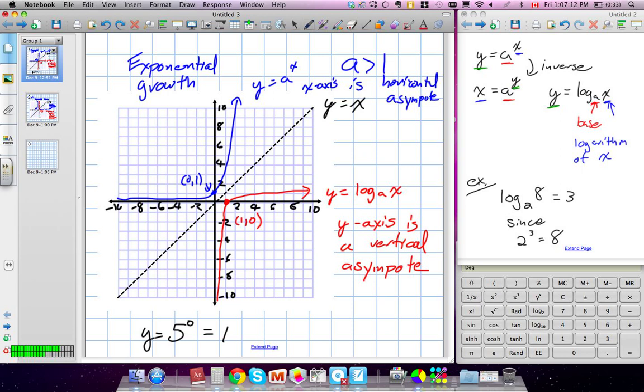So the logarithm, which is our inverse of it, our y-intercept being 0 and 1, well, in that case, it'll become our x-intercept because we inverted the function. So 1 and 0 is our x-intercept. And because the x-axis was our horizontal asymptote for the exponential model, the new asymptote will be the y-axis for the logarithm, the inverse function. So those ideas make sense.